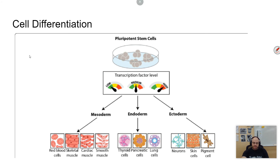This diagram shows a pluripotent cell. 'Pluri' means 'more than' and 'potent' means strength or ability, so pluripotent cells are able to become many things. These are like stem cells — they can become anything based on the genes that they transcribe and the genes that they don't transcribe.